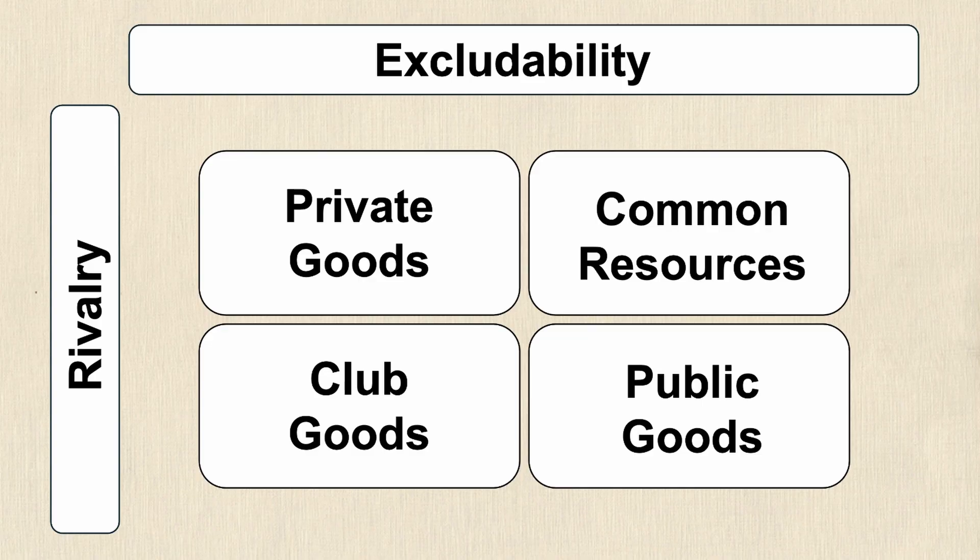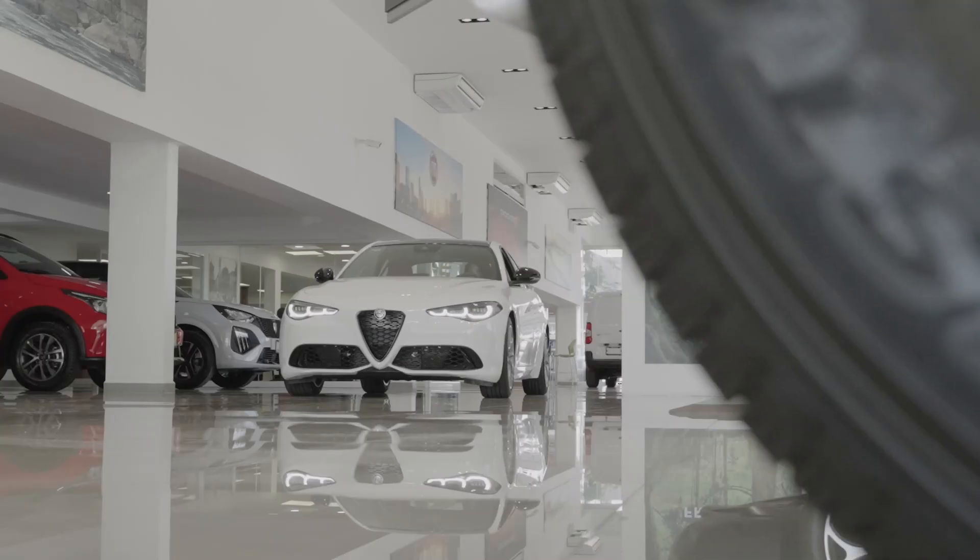All four types of economic goods can be classified as excludable or rival. Let's take a look at all four of them, starting with private goods. Private goods are excludable and they are rivalrous. This means that there's a way to prevent others from using them and one person using this good or service prevents another person from using it as well. Most goods that you think of are private goods — a couple of examples would include if you buy a car.